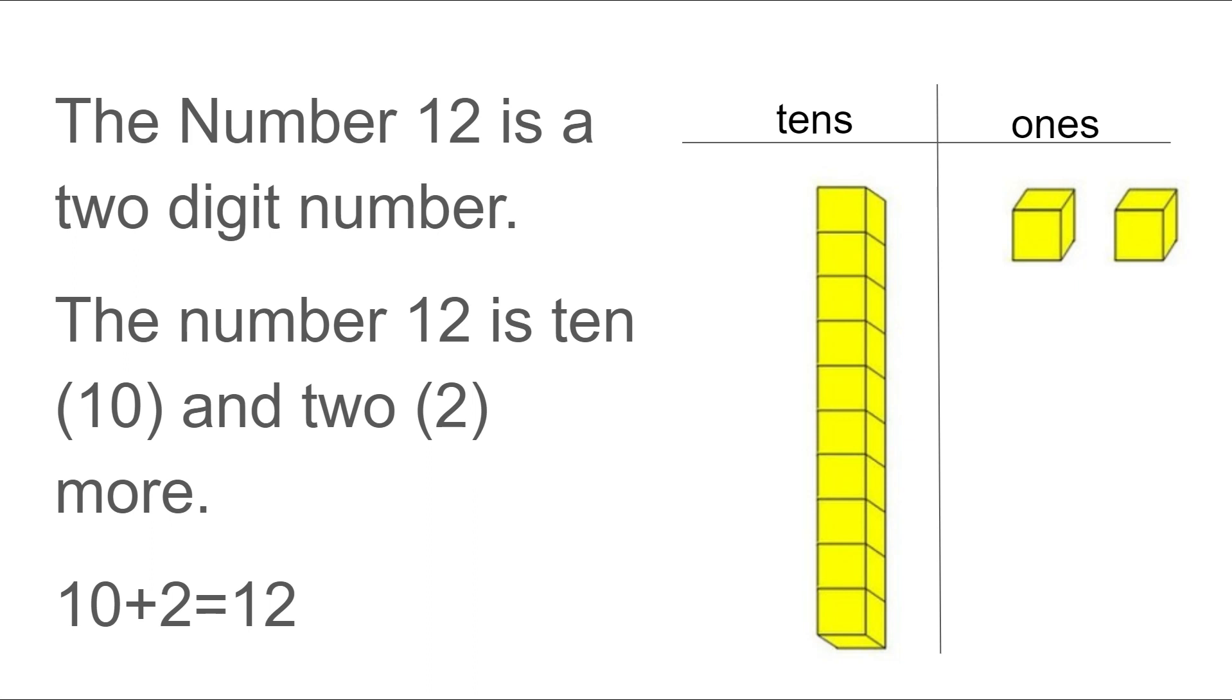The number 12 is a two digit number. The number 12 is a 10, one 10, and two more. 10 plus 2 equals 12. So you see we have one group of 10 and then in the ones column we have two ones.